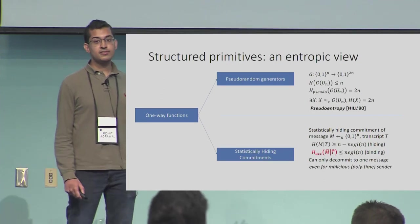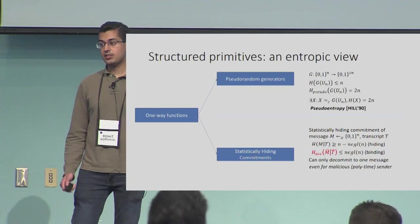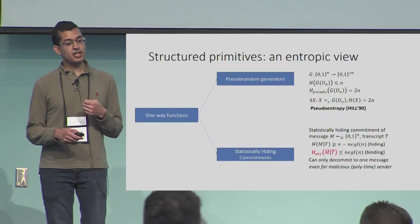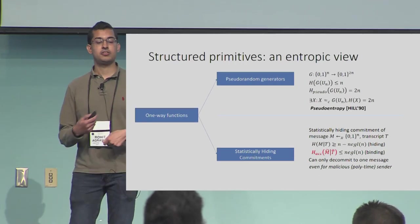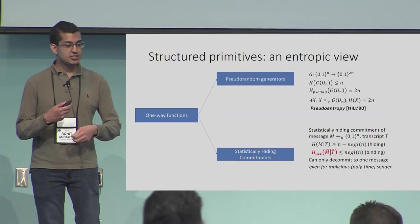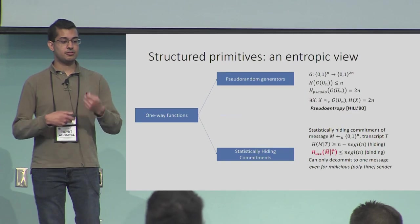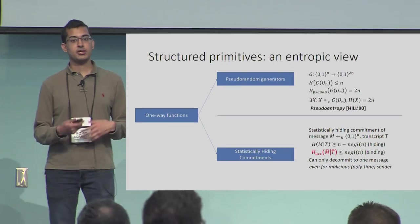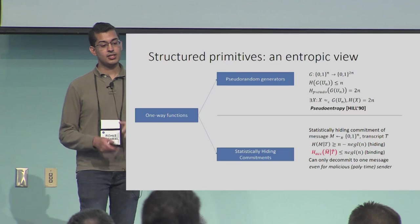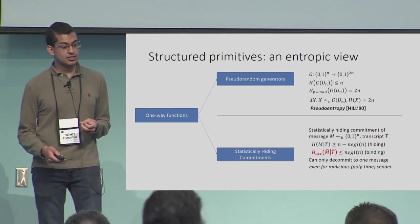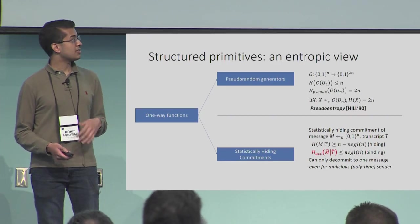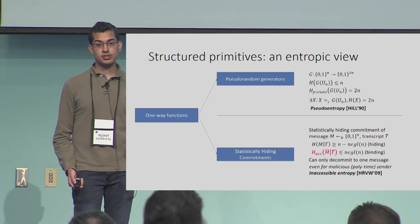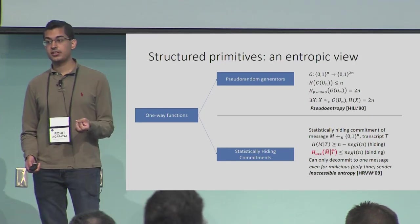Importantly, this holds even if the sender is malicious and does not just sample a message uniformly at random, but instead generates the message and transcript simultaneously in a way trying to access entropy in M given T. The concept is that you still can't do that. This is the recent notion of inaccessible entropy due to Heitner, Rheingold, Vadhan, and Wee.